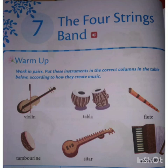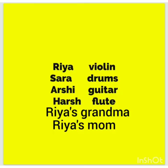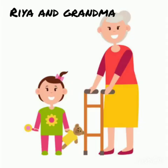Let me introduce you to 4 to 5 characters of this lesson. There are 4 friends: Rhea, Sara, Arshi and Hersh. Rhea plays violin, Sara drums, Arshi guitar, and Hersh plays flute. There are 2 more characters — Rhea's grandma and Rhea's mother. The main central figures of this story are Rhea and her grandma.